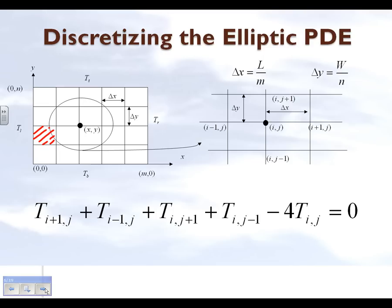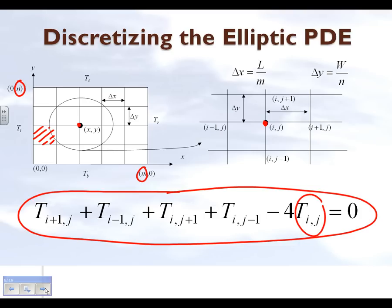We have n+1 nodes in the x-axis and n+1 nodes in the y-axis. We are writing down the equation for the temperature at a particular node. The x node is given as number i, the y coordinate is given node j. We have already found that when we take this Laplacian equation, the second order linear elliptic partial differential equation can be discretized such that the temperature at the node in the middle is given by the temperatures of the four surrounding nodes.